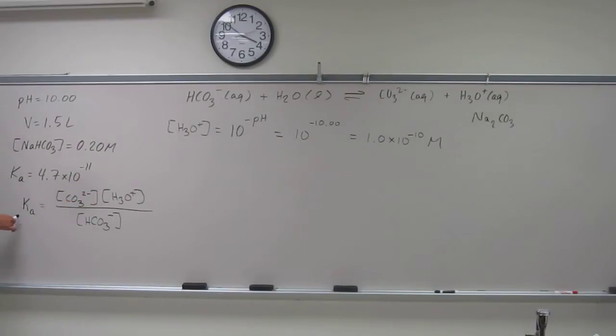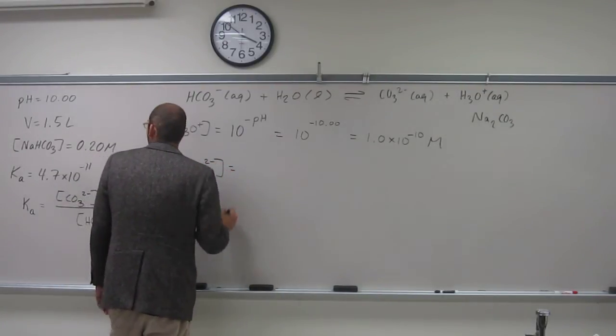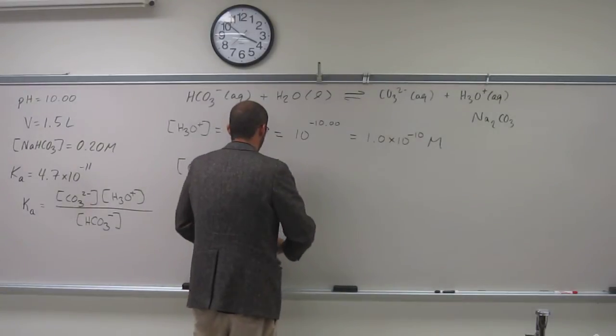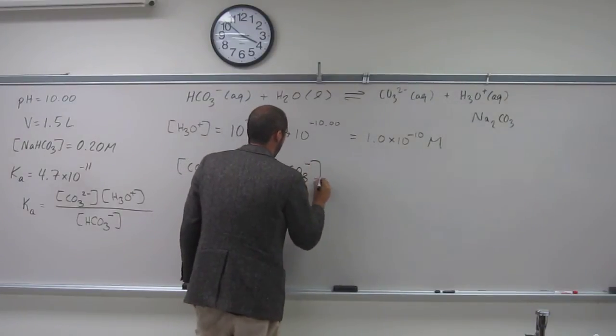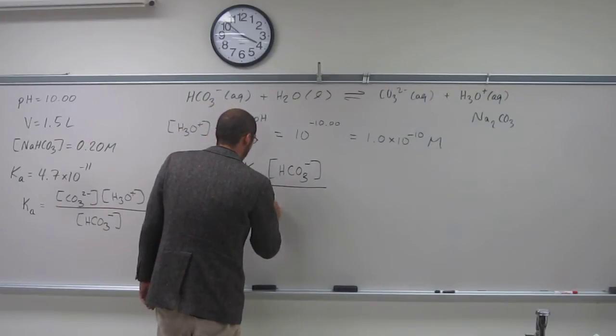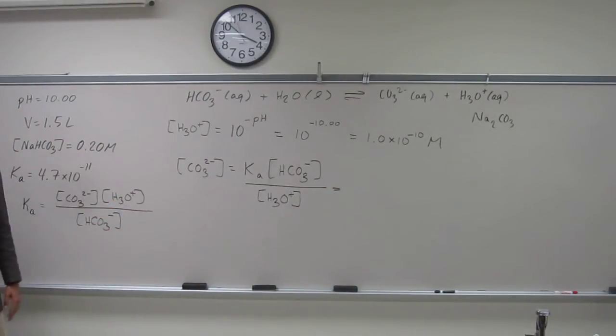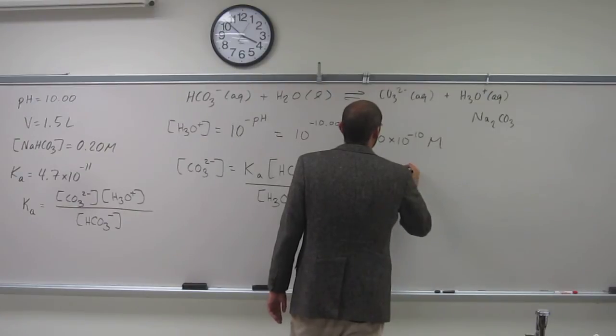We're going to rearrange this equation. We've got Ka, we've got sodium bicarbonate concentration, we've got H3O plus concentration. We're going to rearrange this equation to get the carbonate concentration. 4.7 times 10 to the negative 11.